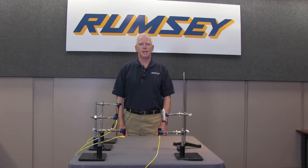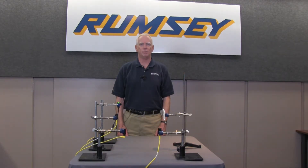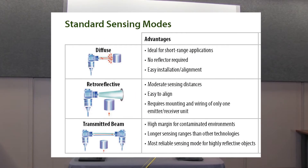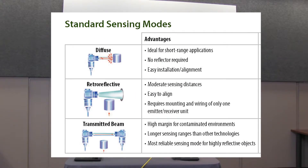Next, we are going to discuss the three most common modes of general purpose photoelectric sensing. They would be diffuse, retro-reflective, and transmitted beam sensing. Each mode has its own unique advantages from extending sensing range to simplifying installation.